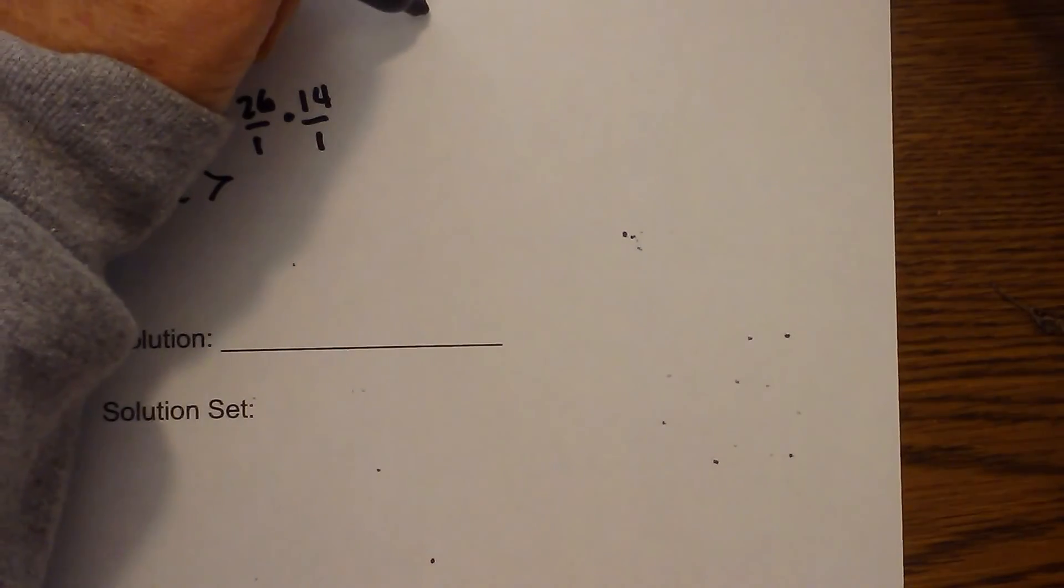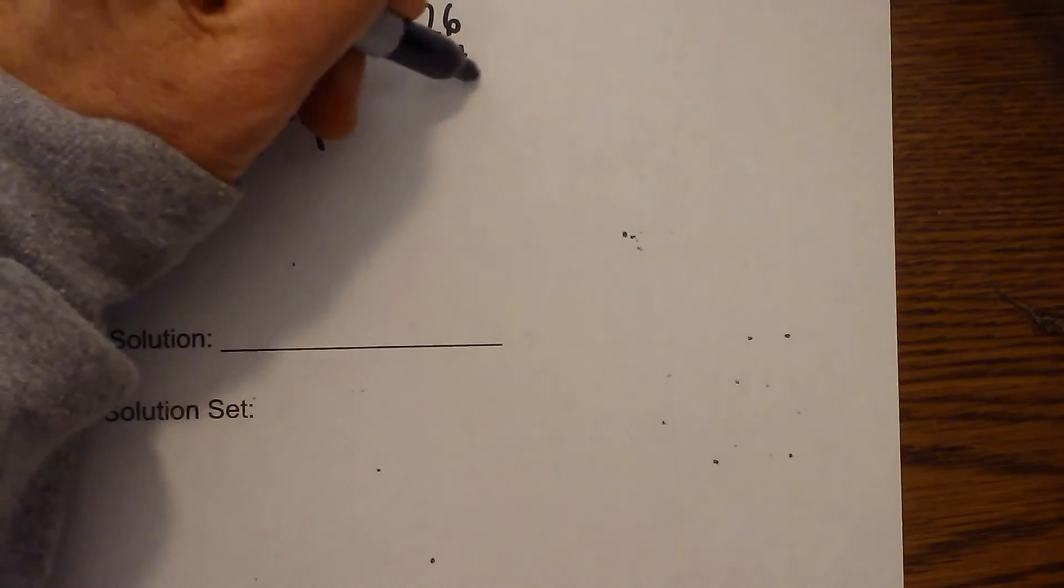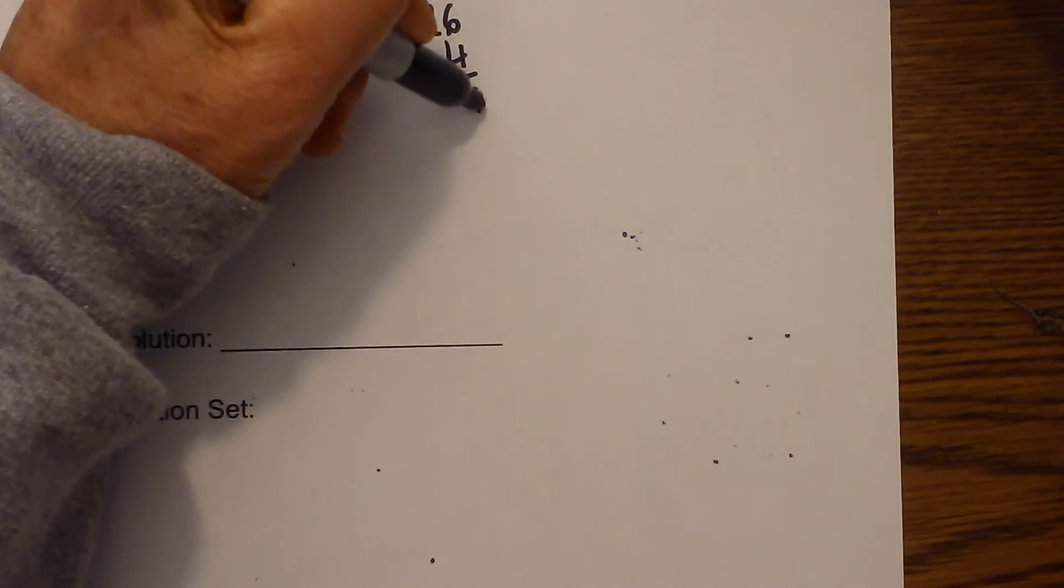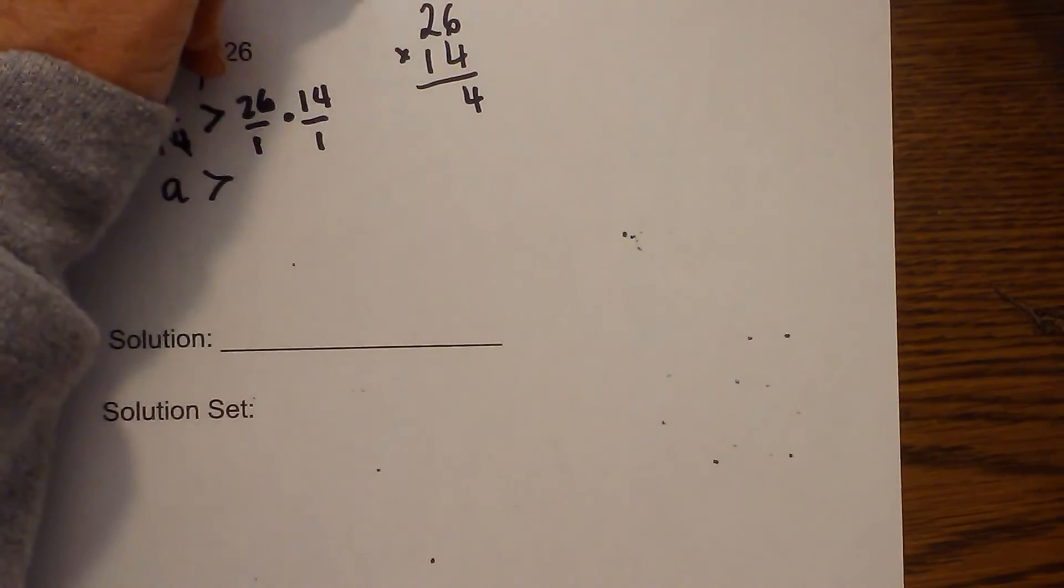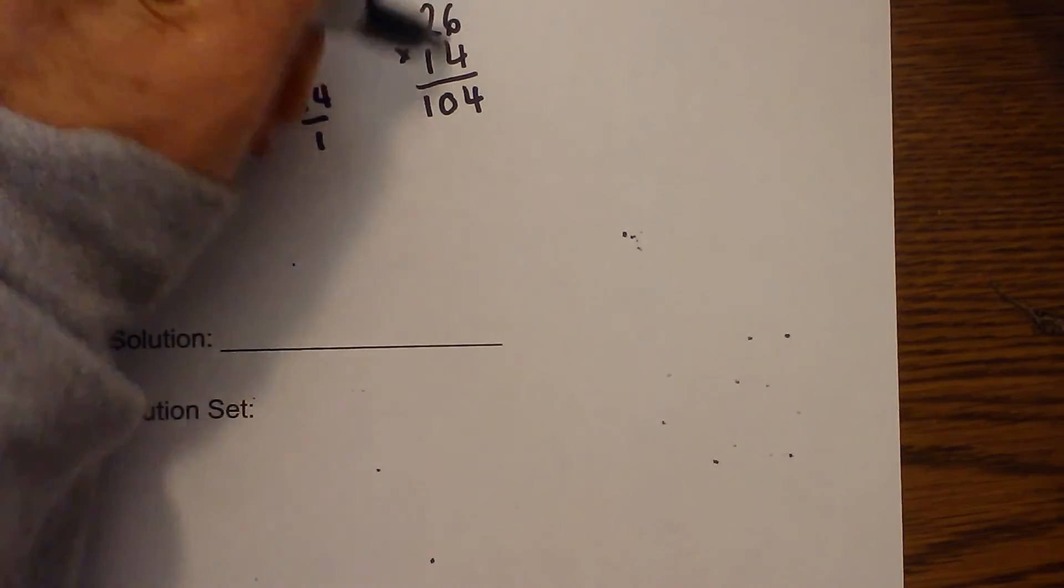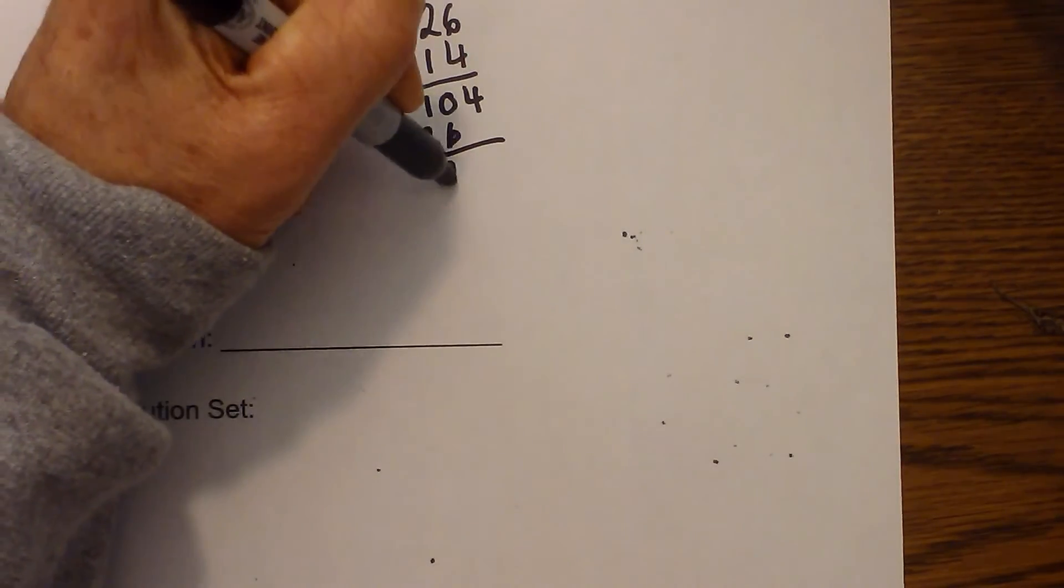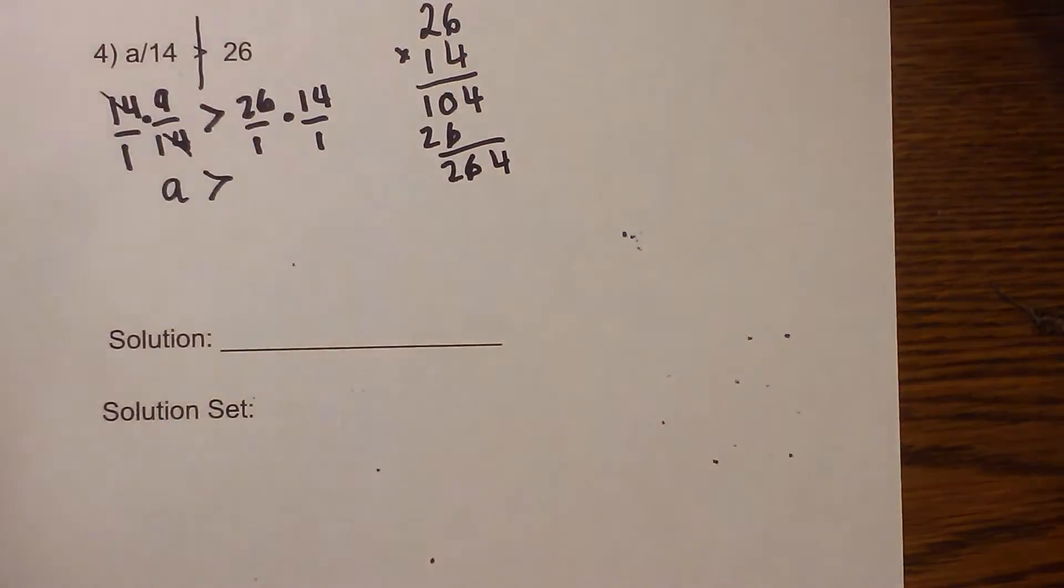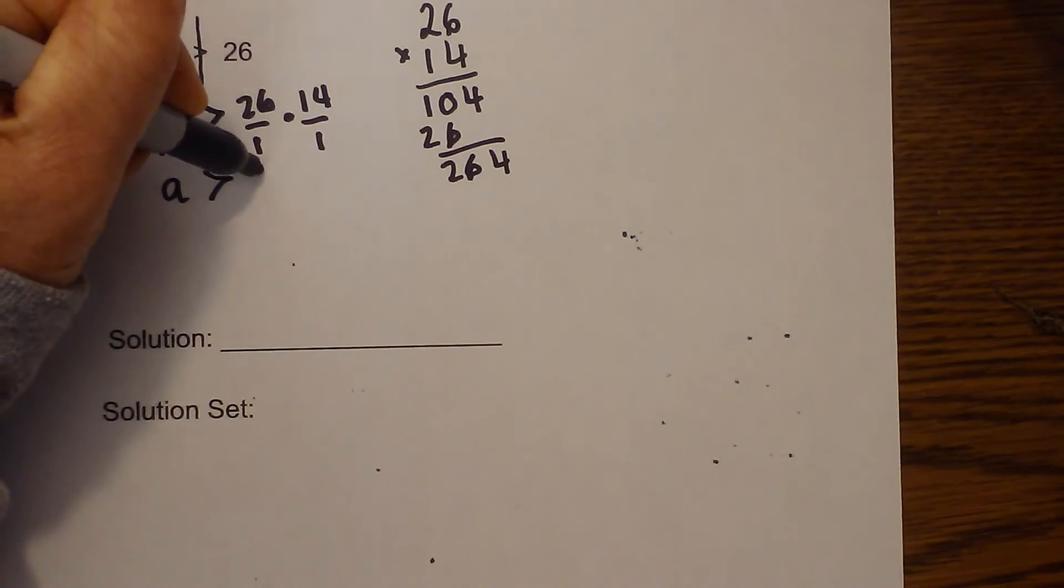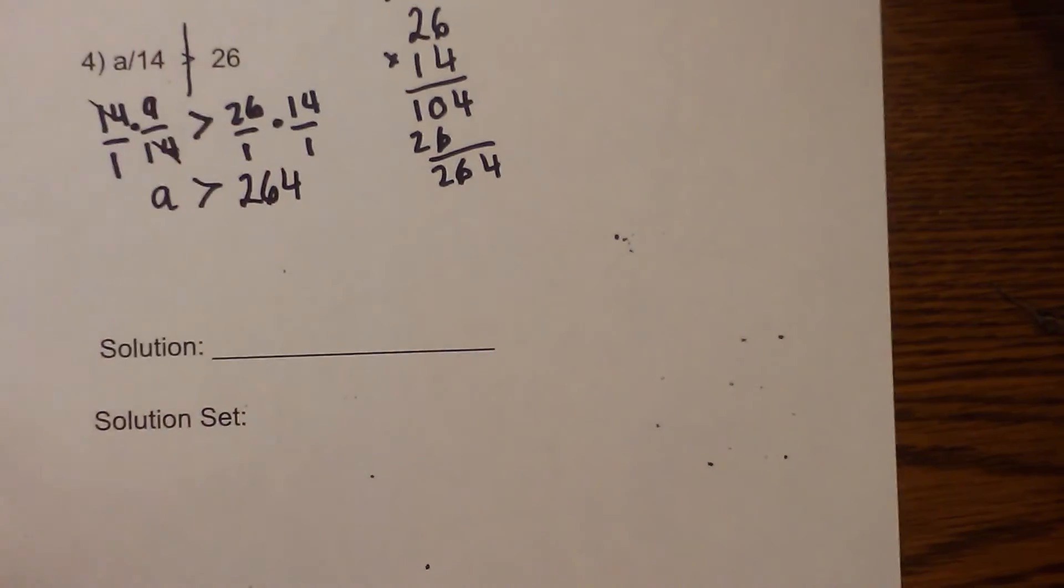And now 26 times 14. So let's set that up. 26 times 14. 6 times 4 is 24, carry 2, 8 times 2 is 8 which becomes 10. And then 1 times 6 is 6, 1 times 2. So that is 264. So a is greater than 264.